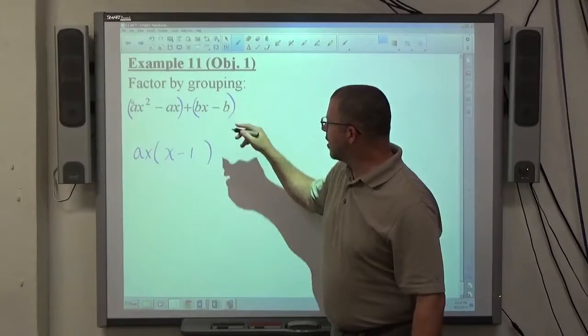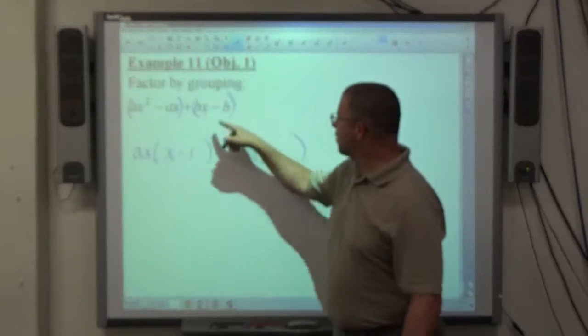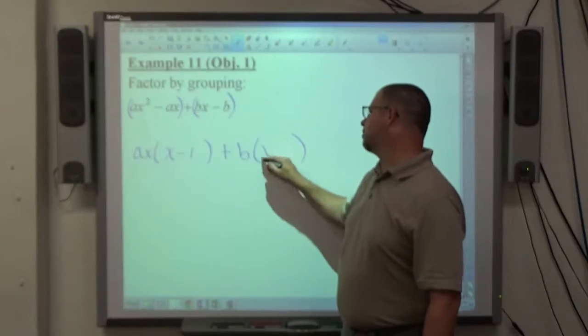The second group, we have bx - b. The common factor of those two is b. If I take a b out of both objects, I'm going to be left with x - 1.